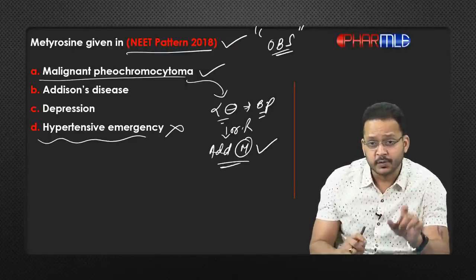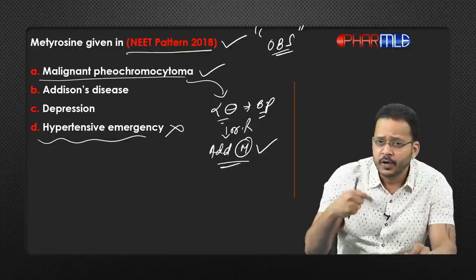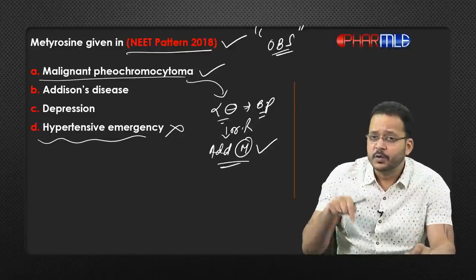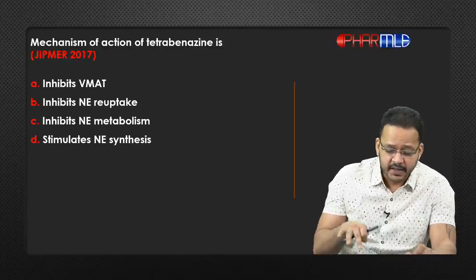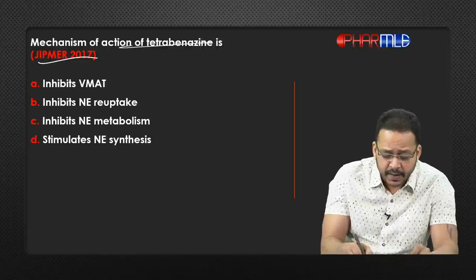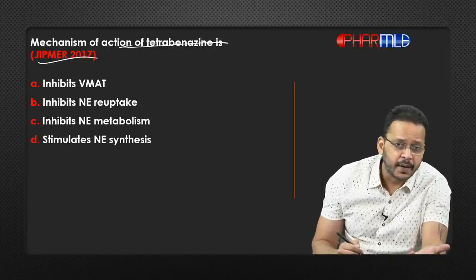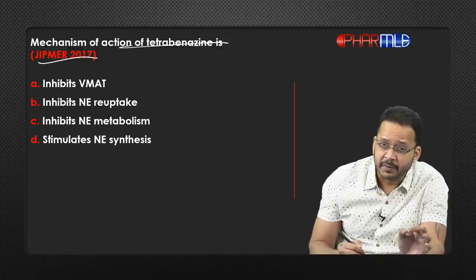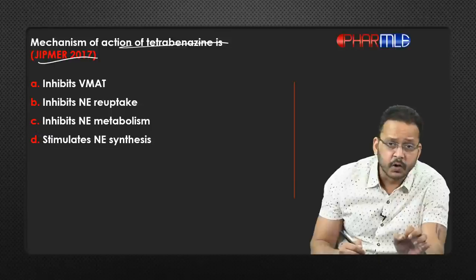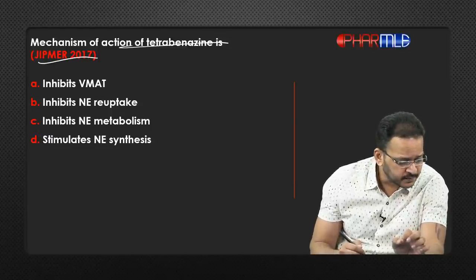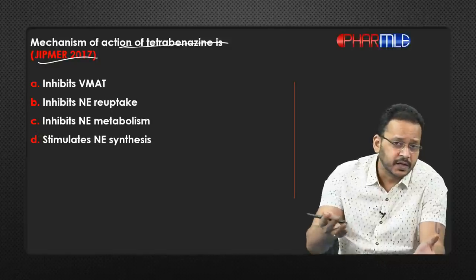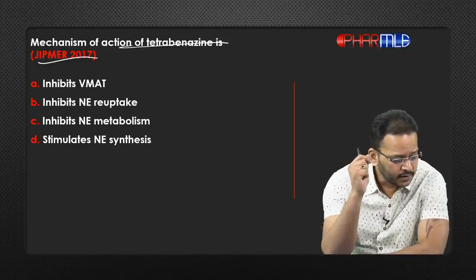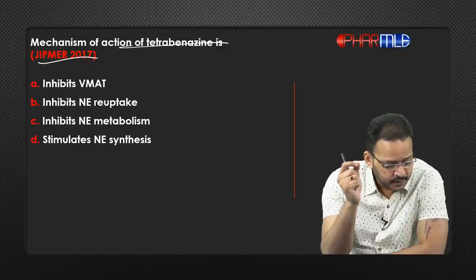They ask MCQs on drugs acting upon neurotransmitters. A question recently asked in GIPMO 2017: what is the mechanism of action of tetrabenazine? Is it inhibition of VMAT, inhibition of norepinephrine reuptake, inhibition of norepinephrine metabolism, or stimulation of norepinephrine synthesis?